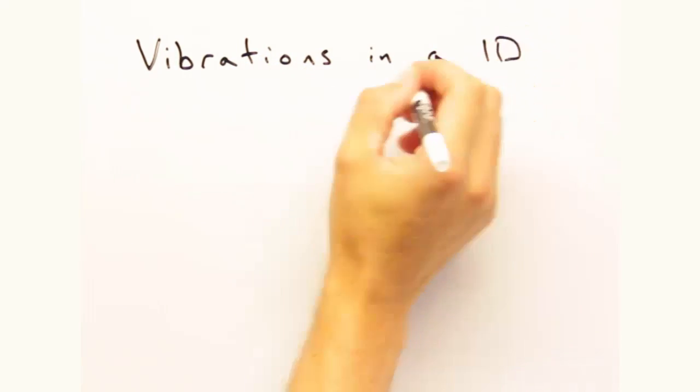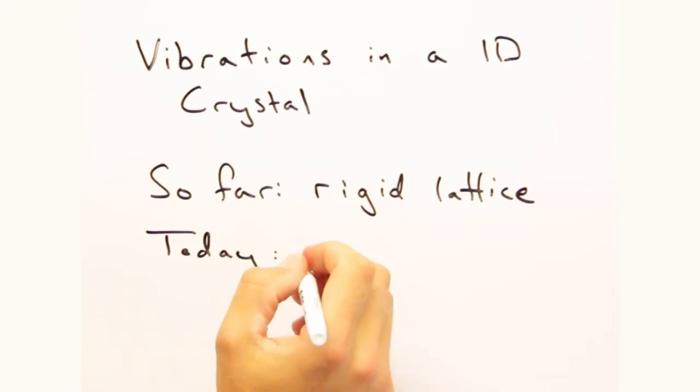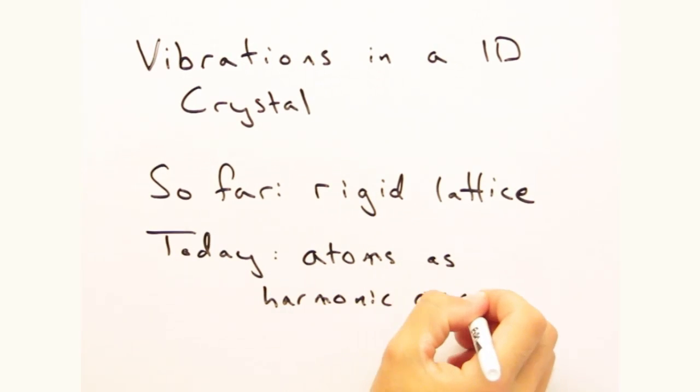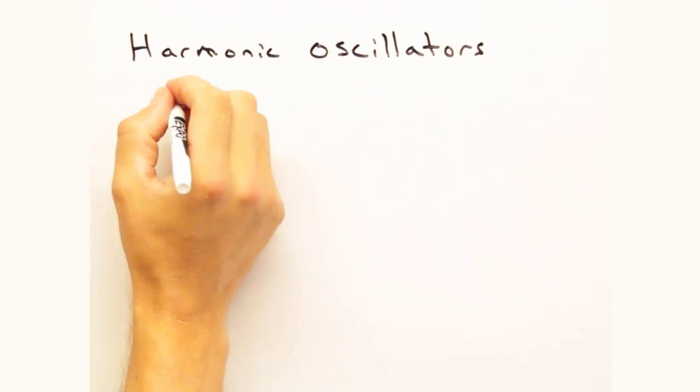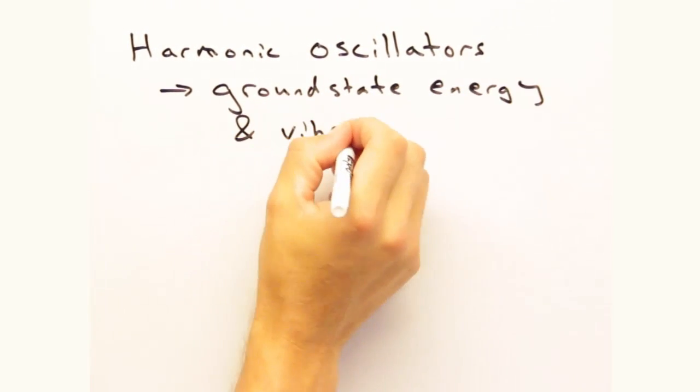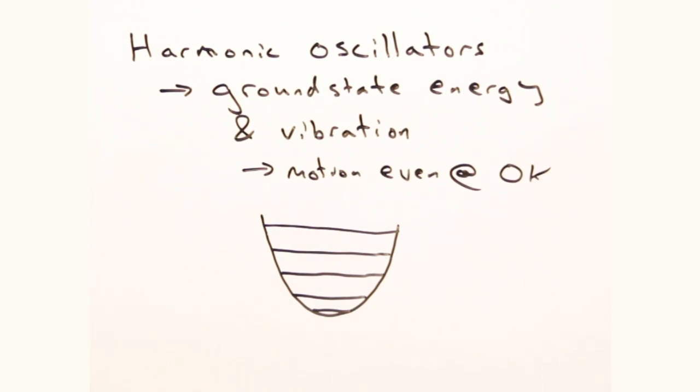Our goal today is to introduce how vibrations behave in a one-dimensional crystal. Up to this point we've considered solids where atoms are stuck in their positions within the lattice, but in reality we can think of our atoms as simple harmonic oscillators which have a ground state energy and an associated vibrational mode even at zero Kelvin. Really then we should be thinking of crystals as dynamic structures, and so this rigid boring picture is actually wrong.